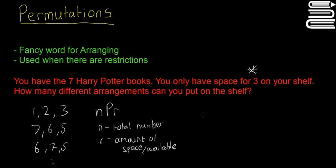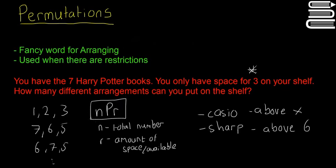On a Casio calculator, it's above the multiply button. On Sharp calculators, it's above the number six button. To access it, you press either the shift or second function button—it looks like nPr. It'll be in the orange writing above the button.